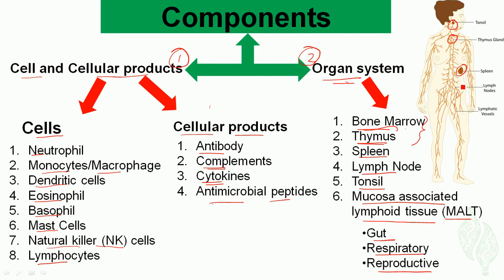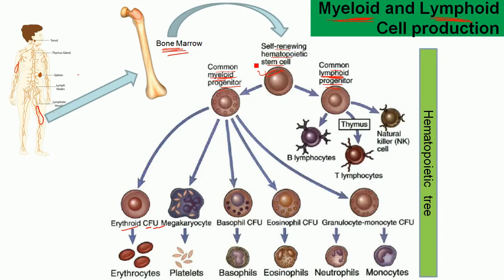We have lymph nodes all over the body, and these lymph nodes are connected by the lymphatic vessels. Next, let's see how these immune cells are produced in our body.